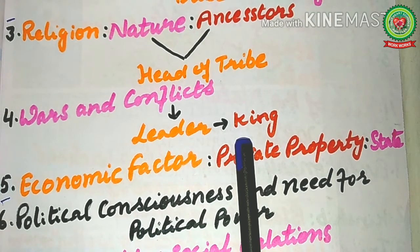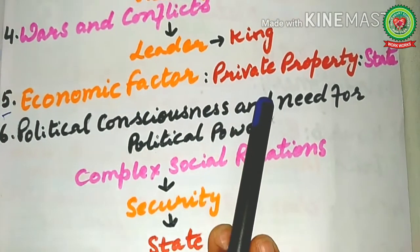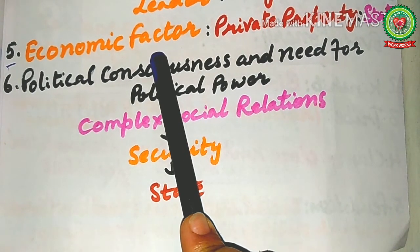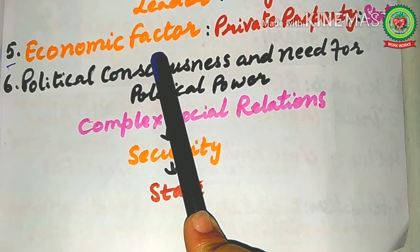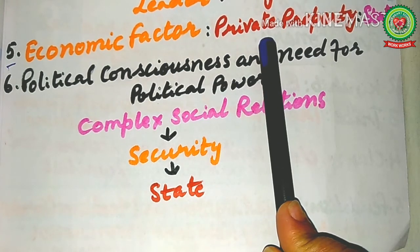This type of arrangement evolved naturally and helped the process of the emergence of the state, so the factor of force also played an important part in the formation of the state. Now I will discuss the economic factor. The increase in the needs of men resulted in the institution of private property of families.